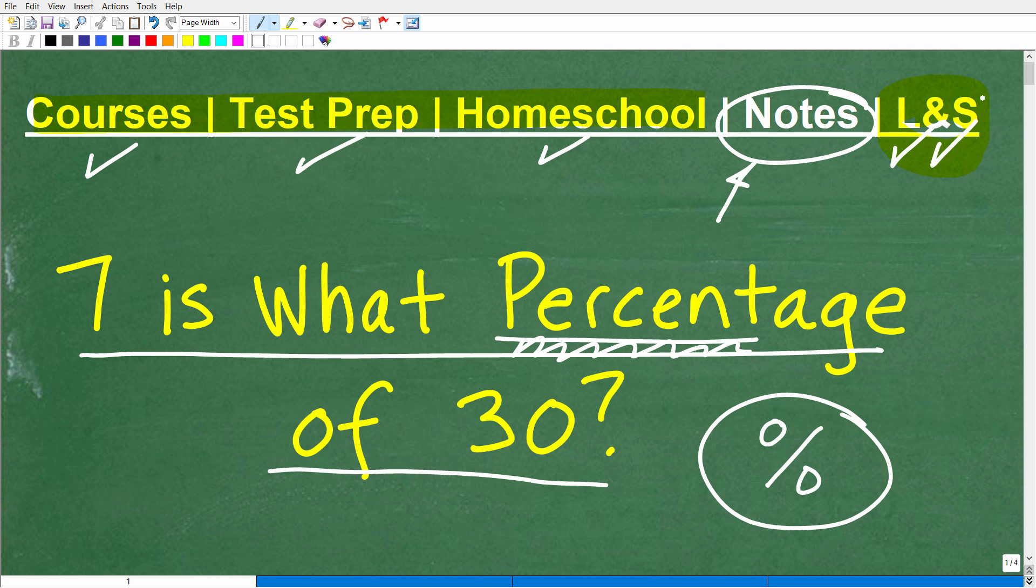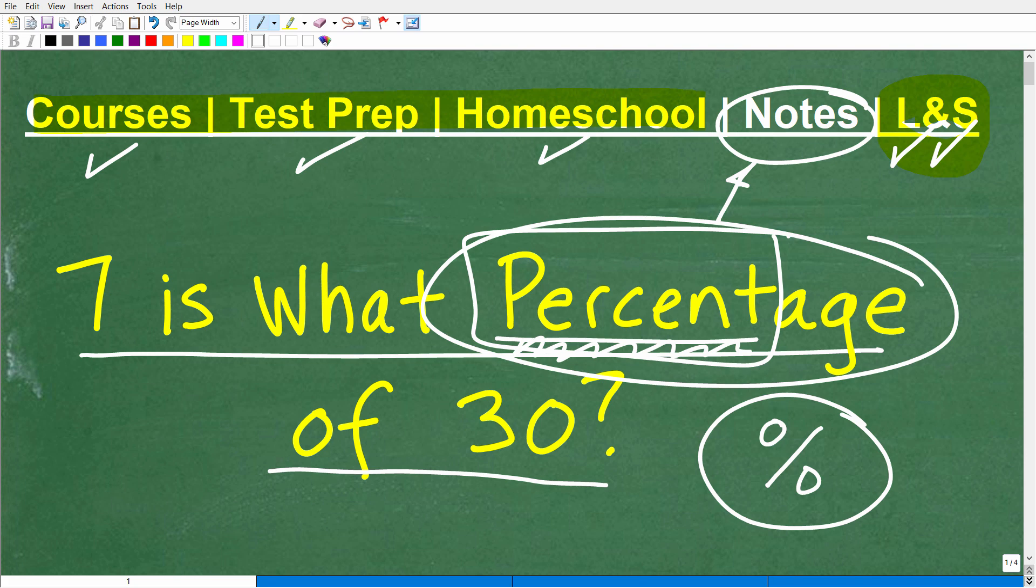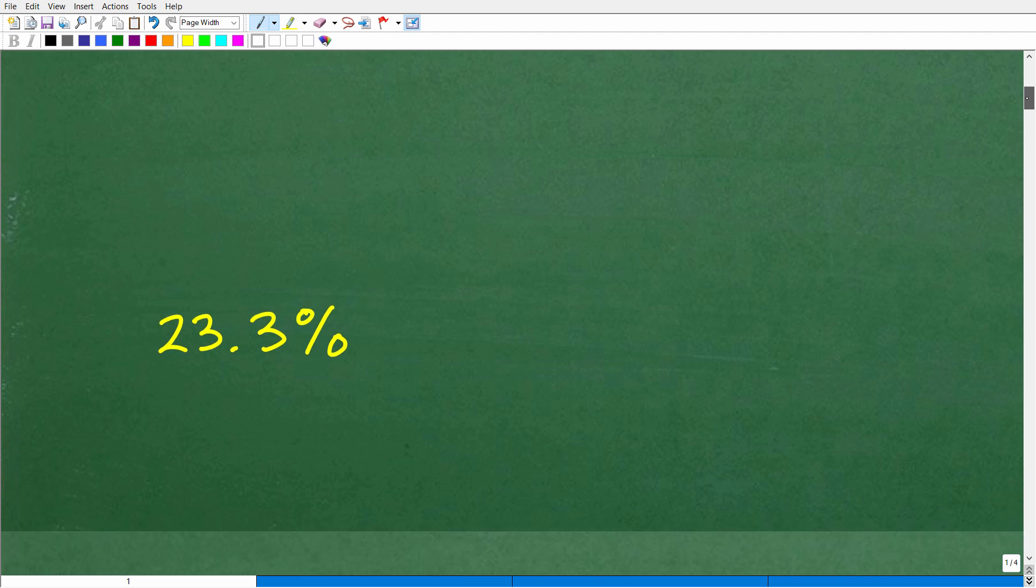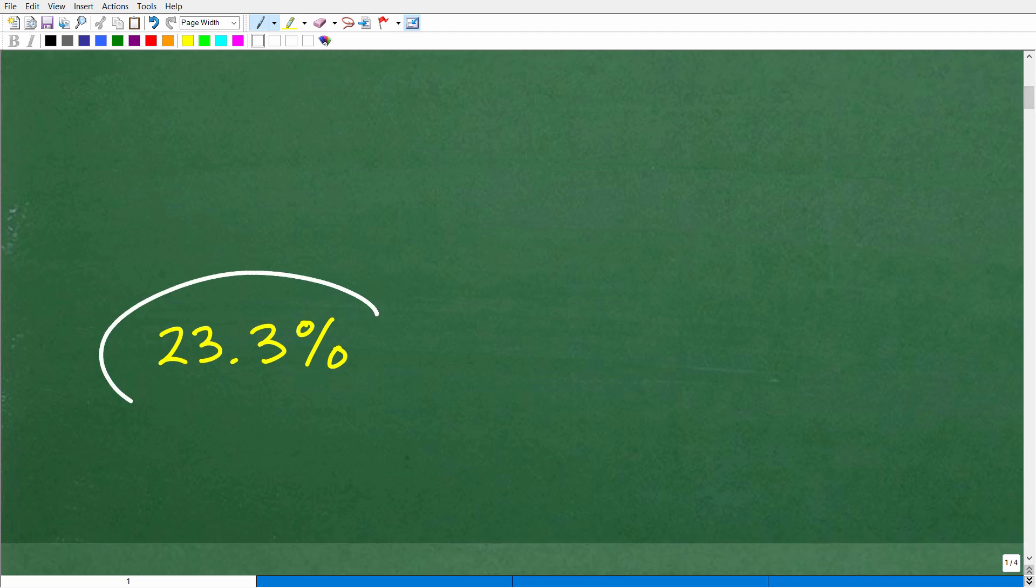Okay, so 7 is what percentage of 30? Now, don't let this word kind of fool you, percentage. I could have easily used the word percent. 7 is what percent of 30? So when you see the word percent or percentage, it effectively is the same thing. But let's go ahead and take a look at the answer. The answer is approximately 23.3%. This is the answer. Okay, so how did you do?